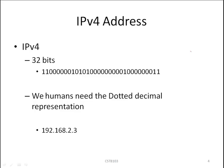An IPv4 address consists of 32 bits, where each bit has a value of 0 or 1. Imagine trying to remember 32 bits. That is why we humans remember these addresses using the dotted decimal representation. In this example, the 32 bits represented in dotted decimal notation is 192.168.2.3. It is a lot easier to remember this than 32 bits.